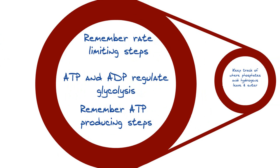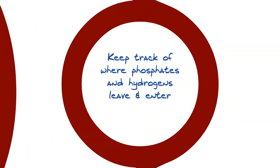If you really want to score 100% on an exam, keep track of where your phosphates and hydrogens leave and enter. Sometimes they'll ask you by putting a radiotracer on a certain oxygen and asking where it leaves the energy production cycle of the cell.